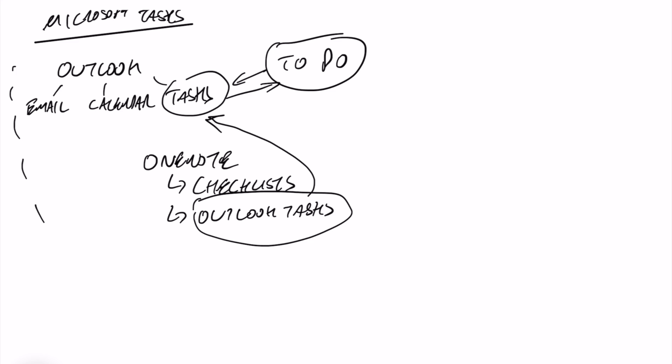Those are all, I would say, personal task options. Keeping notes, To-Do's, and email all together is something that would be really useful, and it would be great if Microsoft integrated those better. But we are where we are — they're all sort of personal tasks. So what about Teams?